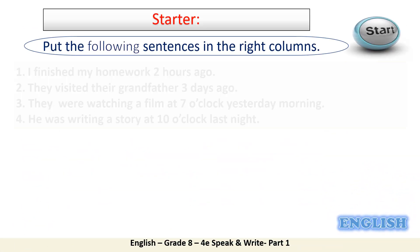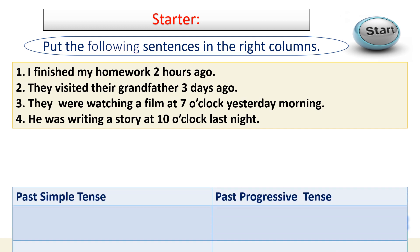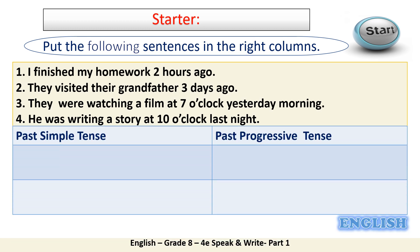Now you should put the following sentences in the right columns. We've got four sentences. You should read each one of them and decide whether to put the sentence in past simple or past progressive. Pause the video for a while, do the task, and get back when you're done.